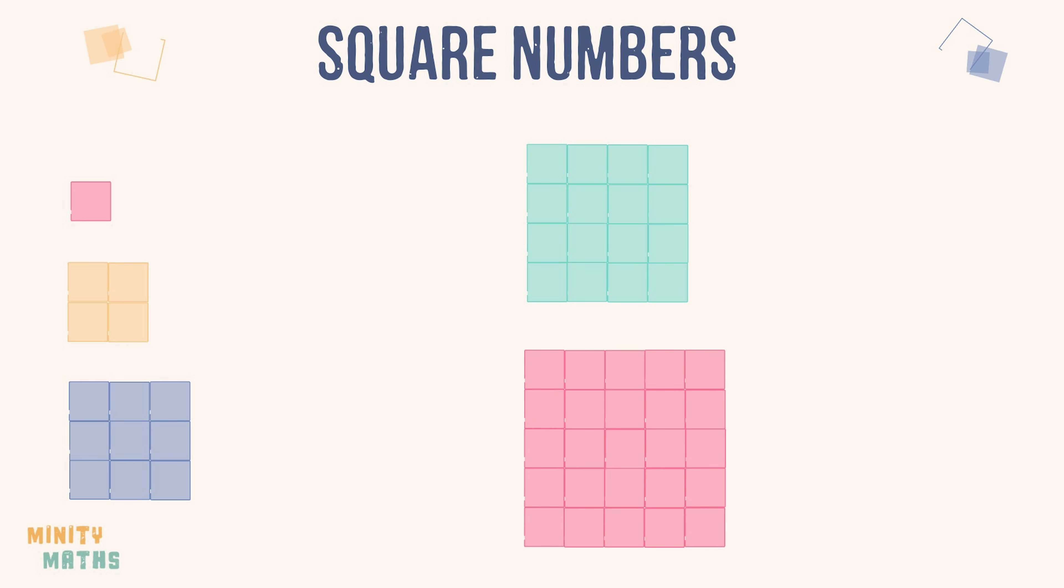Well, to make a square number, all we have to do is multiply a whole number by itself. This will always result in a square number.